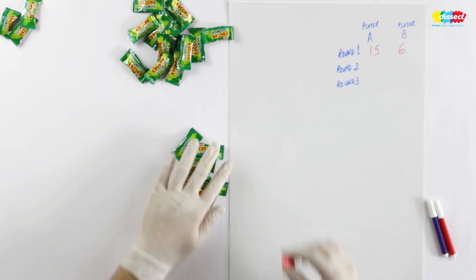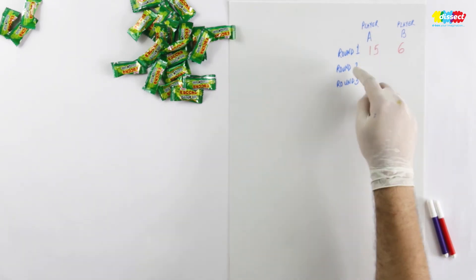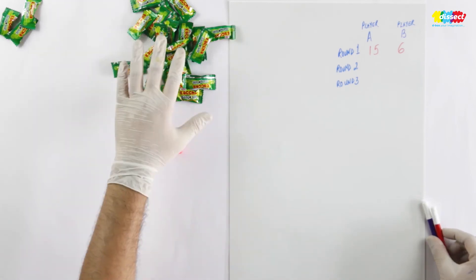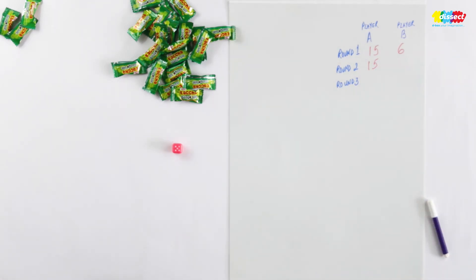Same way we will now put this back. We will again play player A round 2. Again 5. So we have counted this once, we will again have 15 as the score.